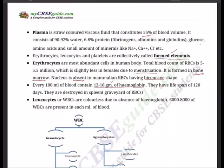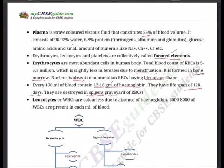Every 100 ml of blood contains 12 to 16 grams of hemoglobin. This is most important — you must check your hemoglobin regularly. If it is below this range, you are anemic. Someone who is anemic becomes weak, experiences excessive sweating, and has difficulty focusing. RBCs have a lifespan of 120 days — that is four months. They are destroyed in the spleen, which is why the spleen is called the graveyard of RBCs.